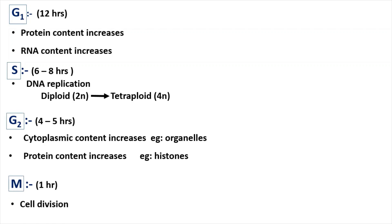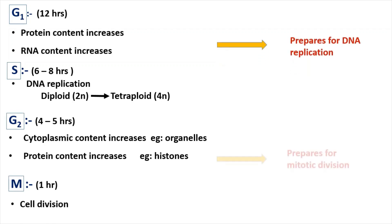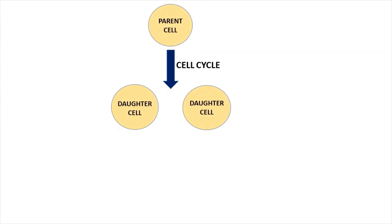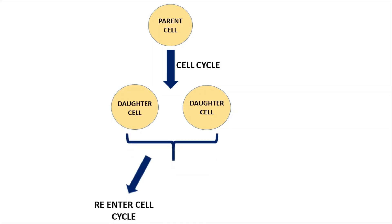So basically, Gap 1 prepares the cell for the Synthesis phase, and Gap 2 prepares the cell for the Mitotic phase. When one cell completes one cell cycle it can produce two daughter cells, since during the Mitotic phase cell division occurs. These daughter cells have two options: they can re-enter the cell cycle if more cells need to be produced, or they can enter the G0 phase.